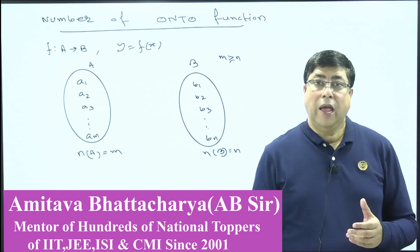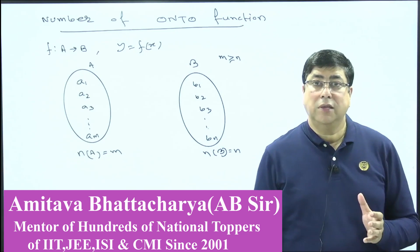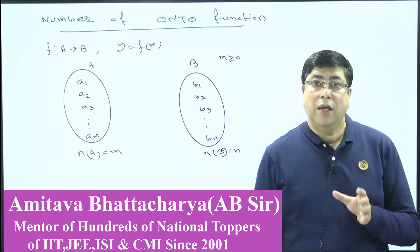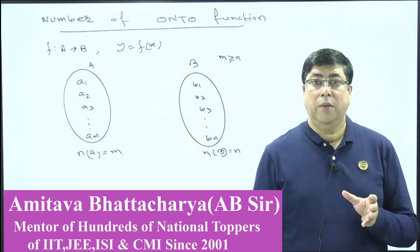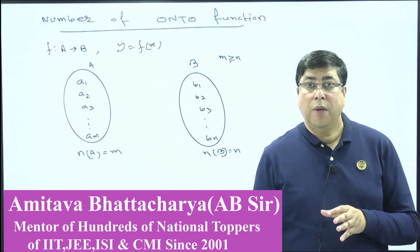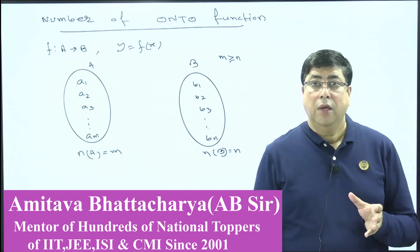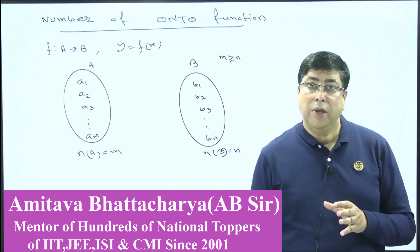In permutation, combination, and in calculus, one particular topic is regularly used: to find the number of one-one mapping, to find the number of onto mapping, number of into mapping, and total number of bijective mapping.